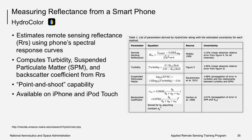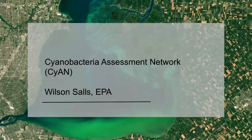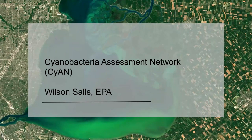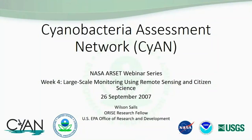Now, to hear more about large-scale monitoring and citizen science programs, it is my pleasure to introduce today's guest speaker, Mr. Wilson Sauls. Wilson works with the U.S. Environmental Protection Agency on the Cyanobacteria Assessment Network, or Cyan project, and today he'll describe the project to us. My name is Wilson Sauls. I'm an Oak Ridge Science Research Fellow at the EPA in Research Triangle Park, North Carolina. I have a Master's in Soils and Biogeochemistry and a Bachelor's in Geology. Today I'm going to be talking to you about the Cyanobacteria Assessment Network, or Cyan for short — a collaboration between the EPA and three other federal agencies: NASA, NOAA, and USGS.